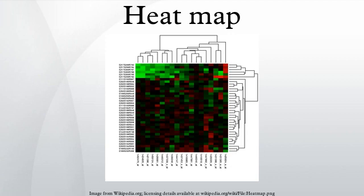The idea for joining cluster trees to the rows and columns of the data matrix originated with Robert Ling in 1973. Ling used overstruck printer characters to represent different shades of gray, one character width per pixel.